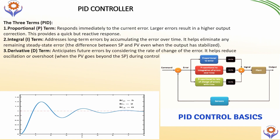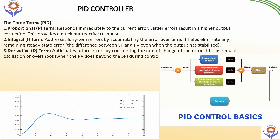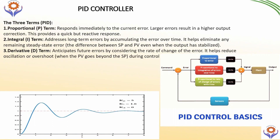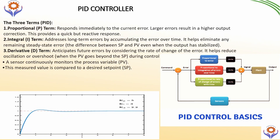The Integral term helps to eliminate any remaining steady-state error, which is the difference between the set point and the process value. For the Derivative term, it anticipates future errors by considering the rate of change of the error. It helps reduce oscillation or overshoot during control.